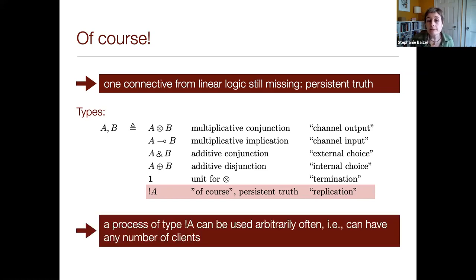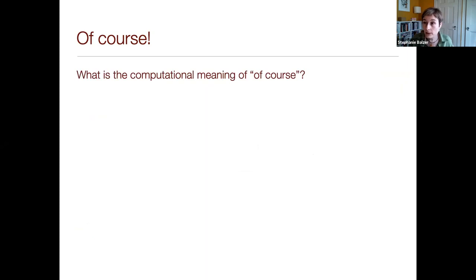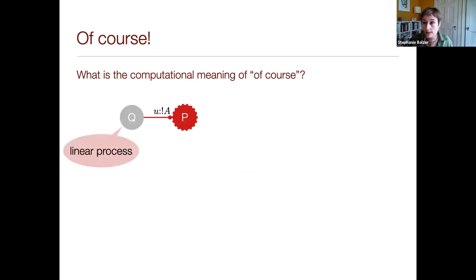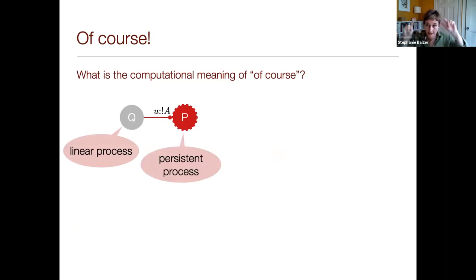What is the meaning of a process of type bang A? It means that this process can be used arbitrarily often — it can have an unbounded number of clients. So let's think about it computationally. I'm representing two processes: a linear client Q and a persistent process P. The persistent process looks like a cogwheel. It offers a session of type bang A.